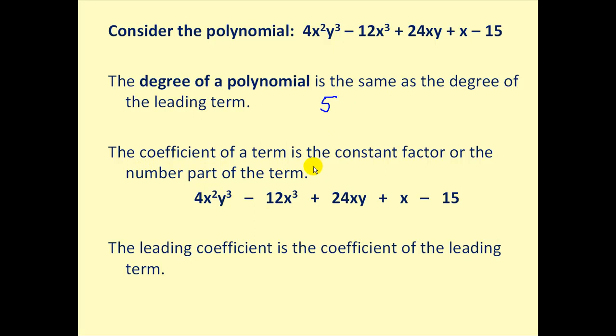Next, the coefficient of a term is the constant factor or the number part of the term. So the coefficient of this leading term would be four. The coefficient of the second term would be negative 12. The coefficient would be 24 for this term.